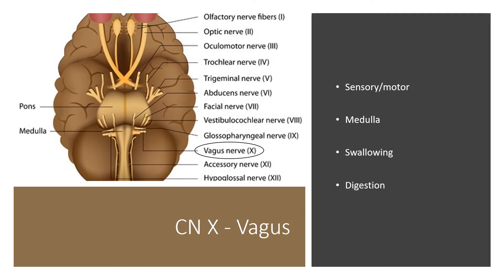Cranial nerve 10 is the vagus nerve. It has both sensory and motor function and is located at the medulla. It is involved in things like swallowing, which is a motor function, and digestion as well.